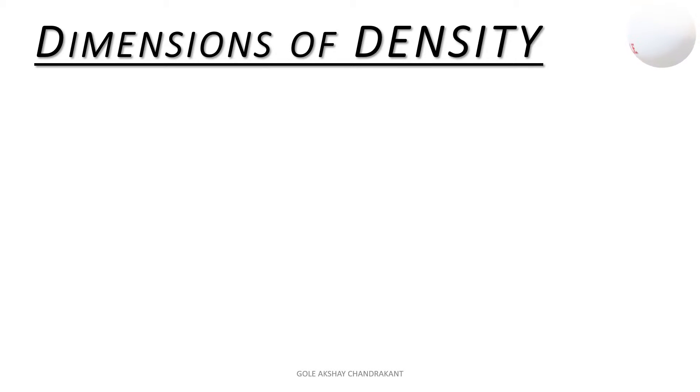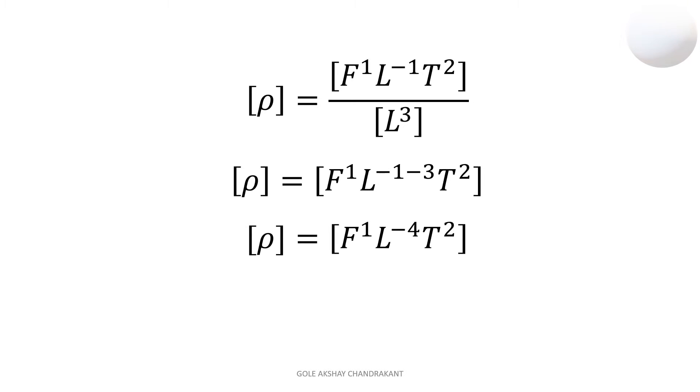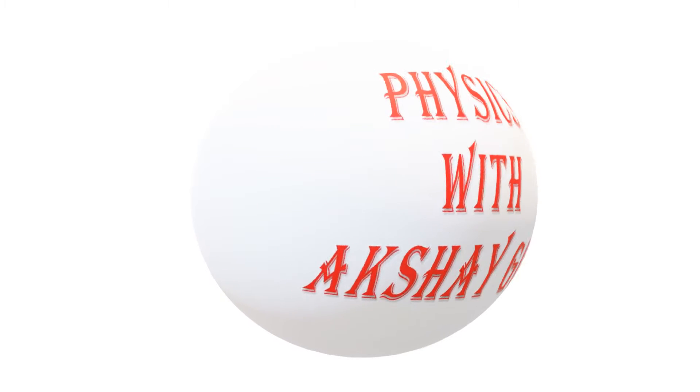Dimension of density is equal to F1 L minus 1 T2 divided by L cube. We calculate it. Dimension of density is F1 L minus 1 minus 3 T2. Density is equal to F1 L minus 4 and T2. Thank you.